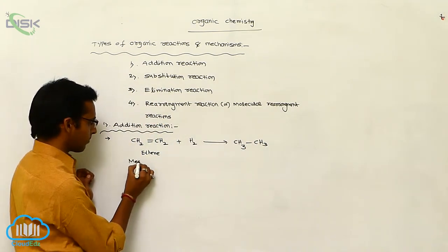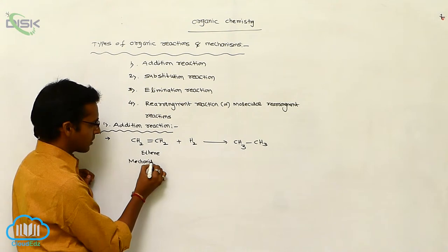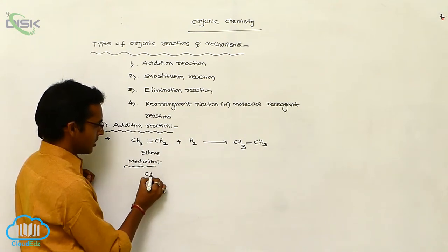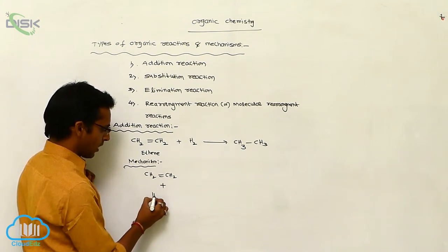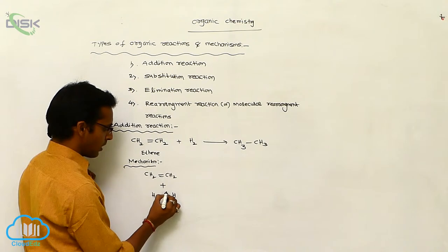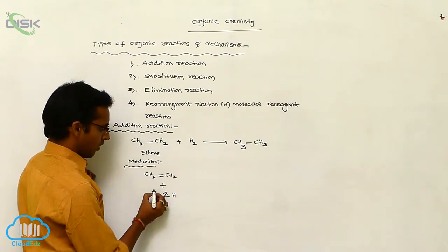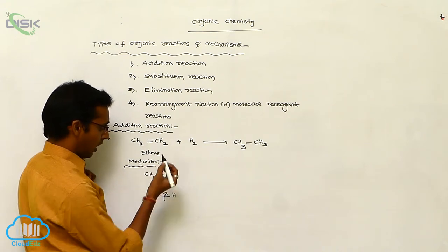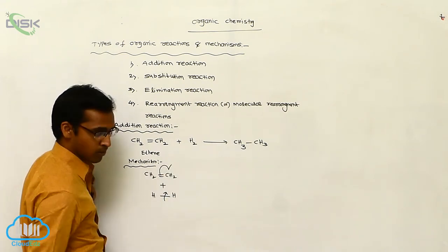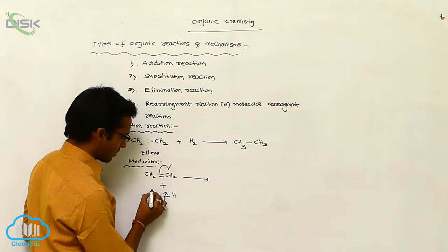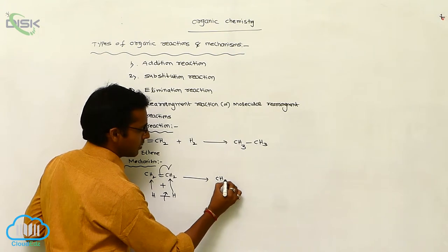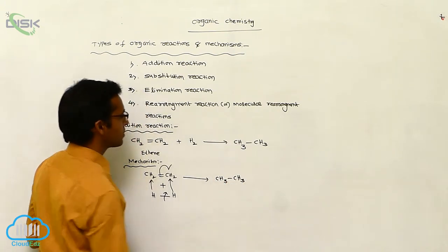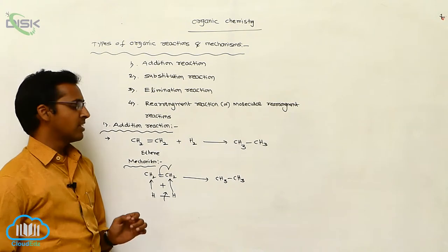See the mechanism: CH2=CH2 reacts with hydrogen. The single bond in H2 undergoes homolytic cleavage, giving positive and negative charges. This bond also undergoes cleavage through an adsorption process, causing addition of hydrogen to each carbon. The double bond is converted to a single bond, giving CH3-CH3. This is called addition reaction.